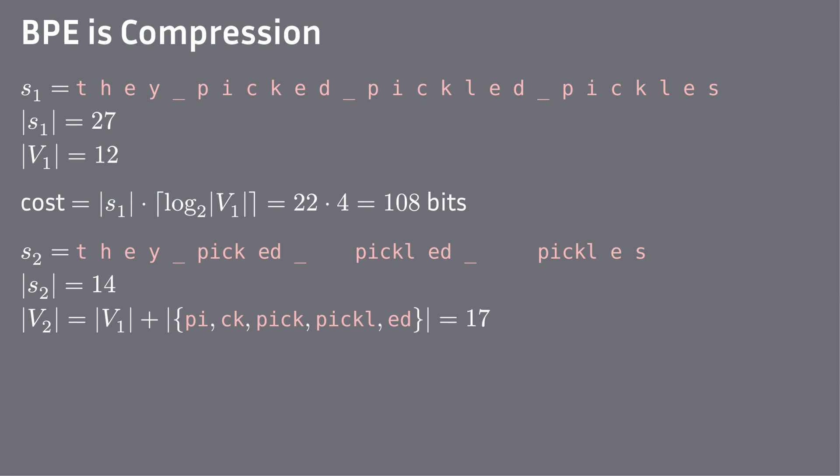When we apply BPE, we only have 14 units. At the same time, we increase the vocabulary size by the new units, so now we need 5 bits to transmit one unit. Still, this comes down to 70 bits for the whole sequence.